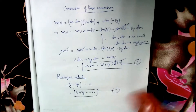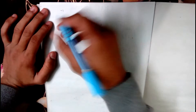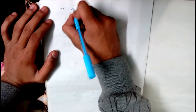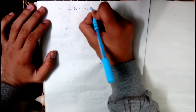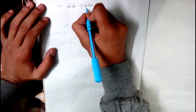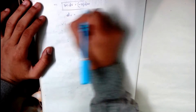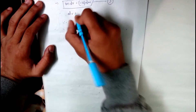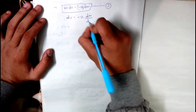Coming to relative velocity and substituting into our first equation: replacing the exhaust velocity term with the relative velocity u, the equation becomes the third equation. Rearranging, dv equals minus u·dm divided by m.